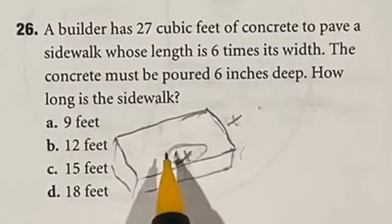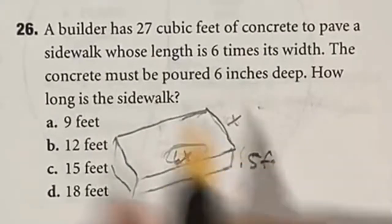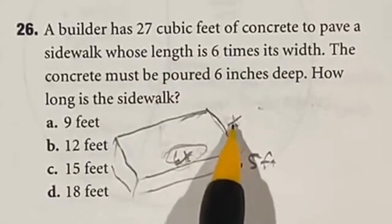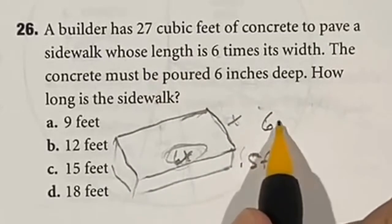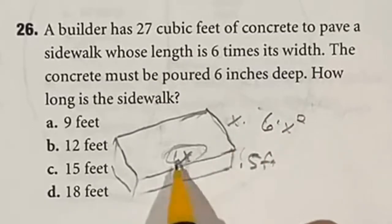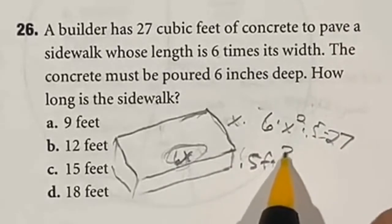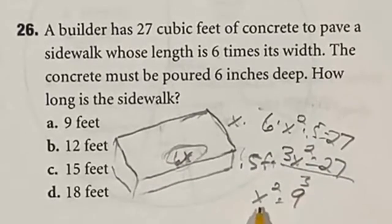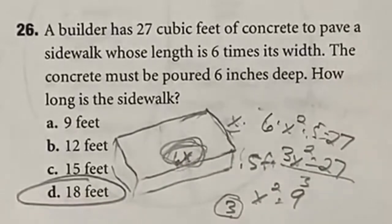The sidewalk is 27 cubic feet, and it's six inches deep — we'll change that to 0.5 of a foot since we're working in cubic feet. The length is six times the width, so the width is x and the length is 6x. Setting up the equation: 6x times x times 0.5 equals 27. Six times 0.5 is 3, so we have 3x squared equals 27. Dividing both sides by 3 gives x squared equals 9, so x equals 3. They want the length, so 6 times 3 gives us 18. Answer D.